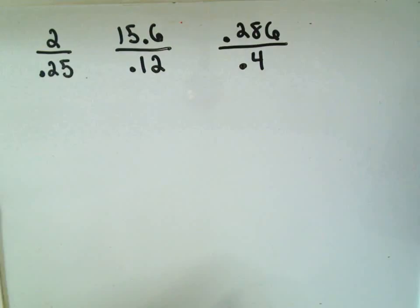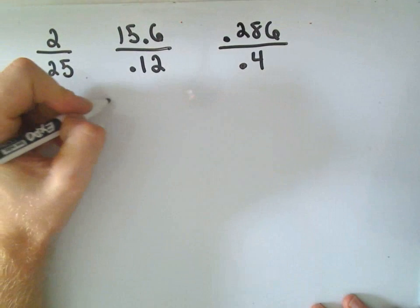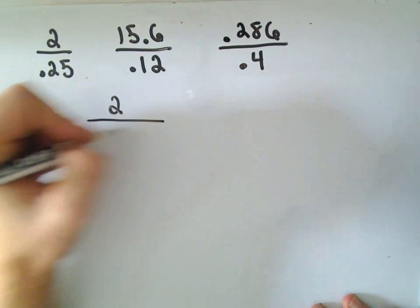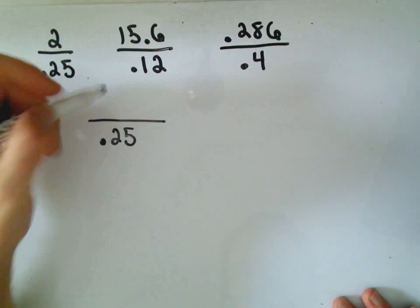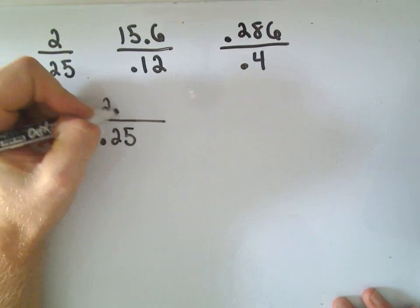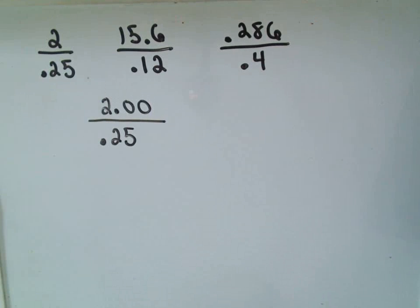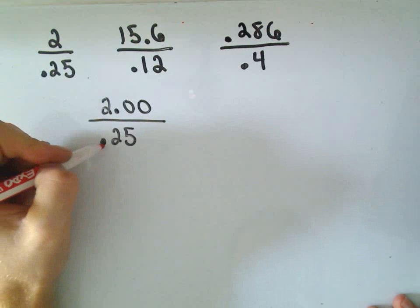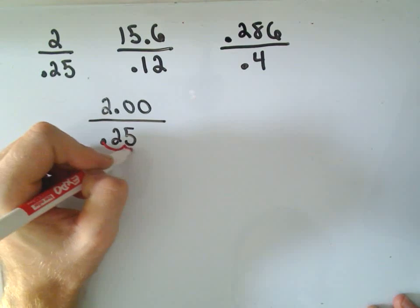So what do I mean by that? Let's do a couple here. Let's take 2 and divide that by 0.25. One thing to notice is the number on top, plain old 2, doesn't have a decimal in there. But we can always write it with a decimal expansion, and I'm going to write it as 2.00. The reason I choose that many zeros is I notice on the bottom, to get rid of the decimal place, I would have to move the decimal two places to the right.